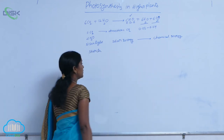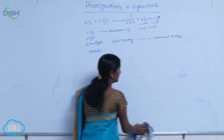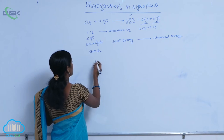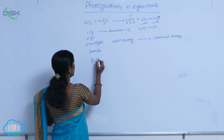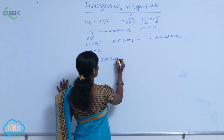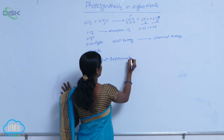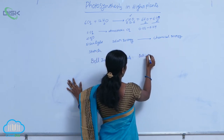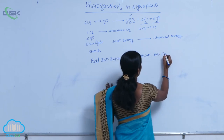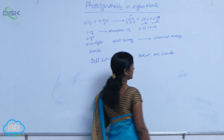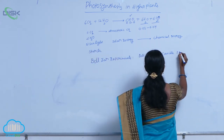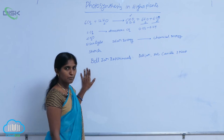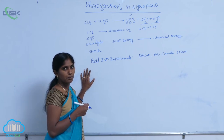Joseph Priestley conducted a series of experiments explaining the importance of oxygen. His experiment is called the bell jar experiment. The materials required are: one bell jar, one rat, a candle, and a mint plant.